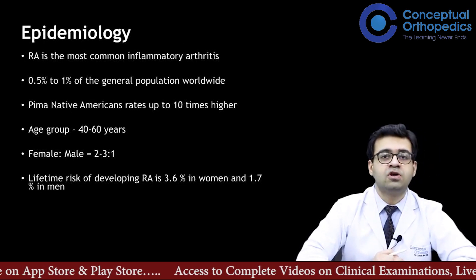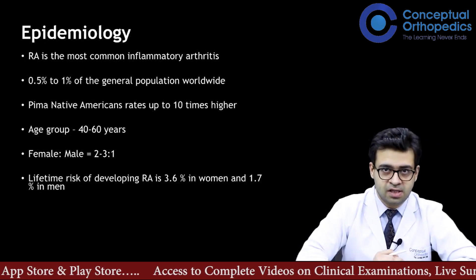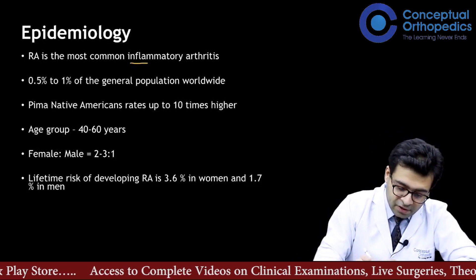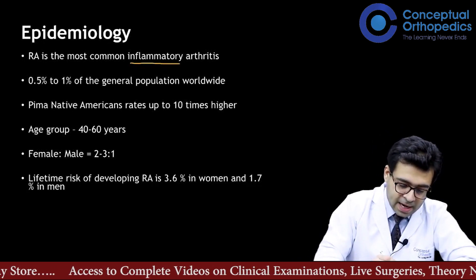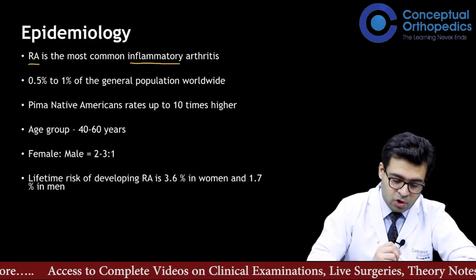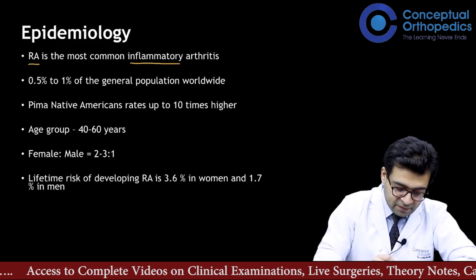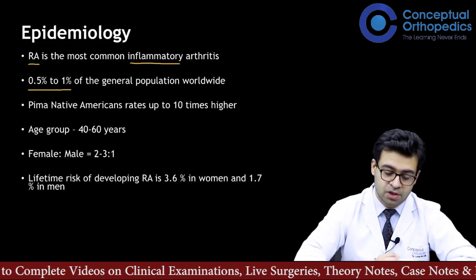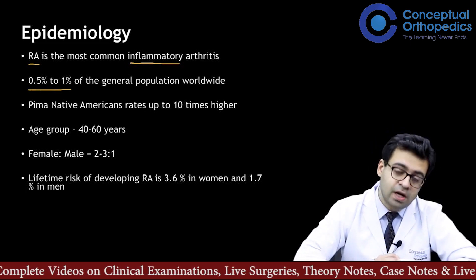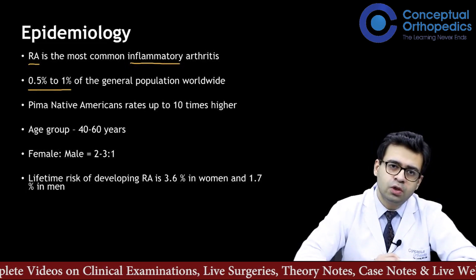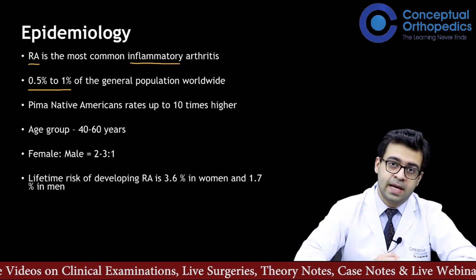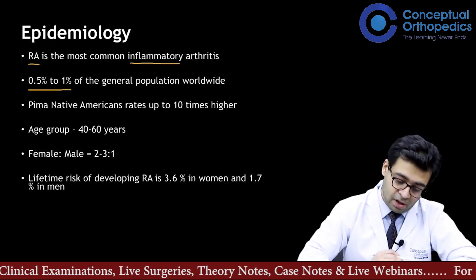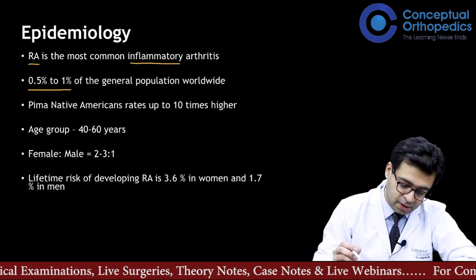Rheumatoid arthritis is the most common inflammatory arthritis. While osteoarthritis is the commonest arthritis overall, RA is the most common in the inflammatory group. It affects 0.5 to 1 percent of the general population, which accounts to a huge number, especially in a country like India with its large population.